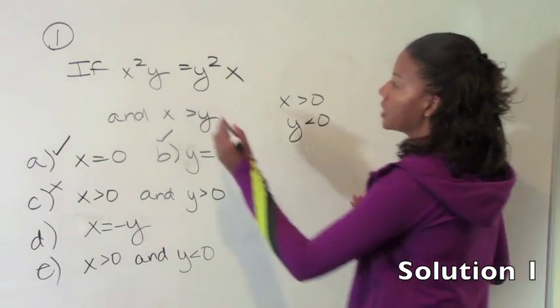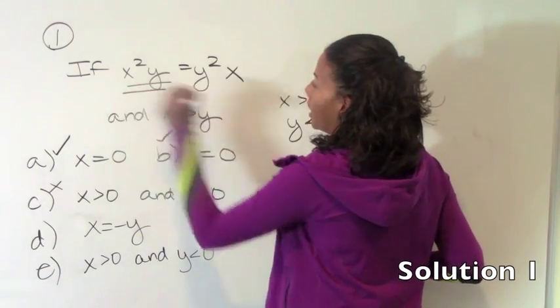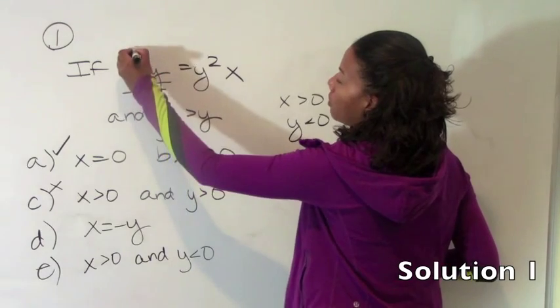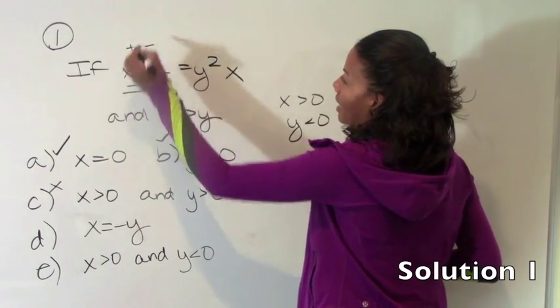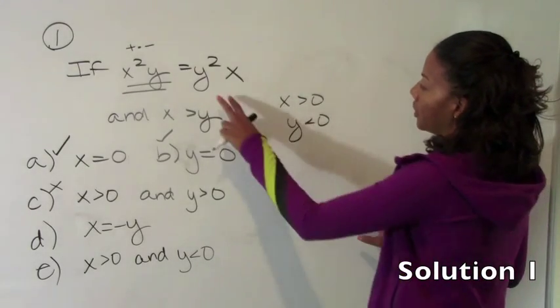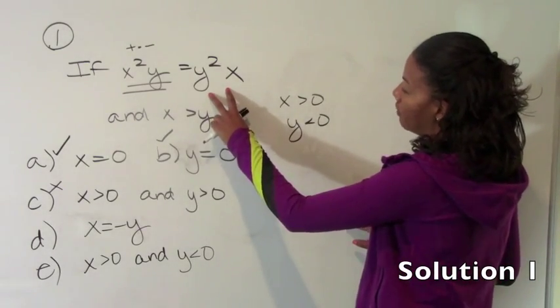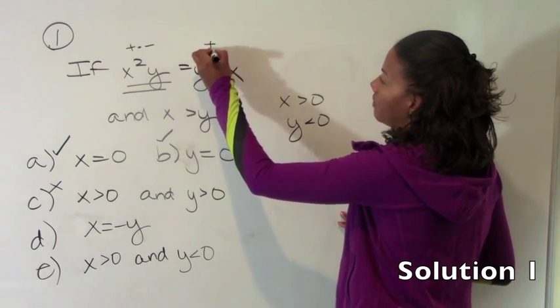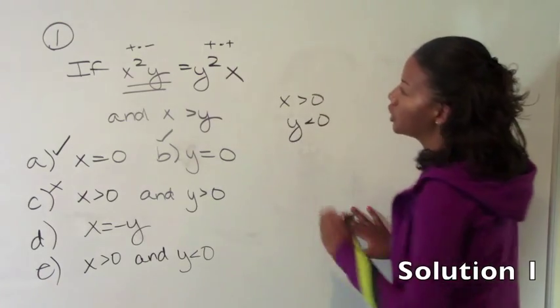So what you'll notice is that this side of the equation would be negative. Because x squared would be positive and y would be negative. And a positive times a negative is negative. Over here, this side will be positive. Because y is negative, but a negative squared is positive times x, which is also positive.